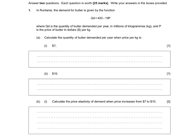So the first question asks us to calculate the quantity demanded of butter per year when the price is $7 per kilogram. So this is a simple substitution.